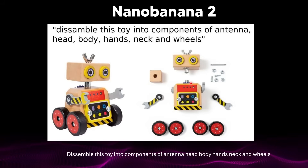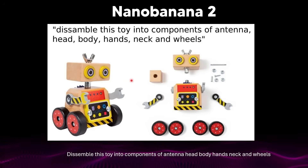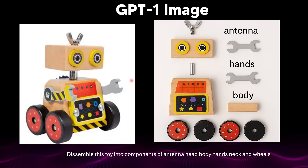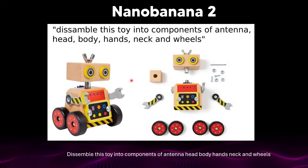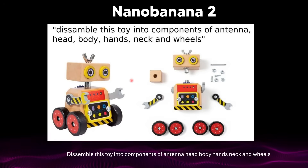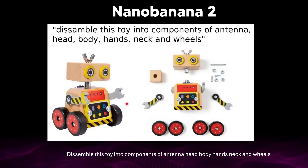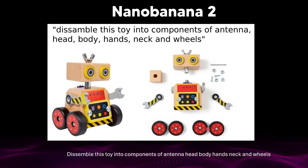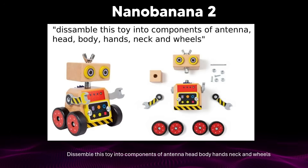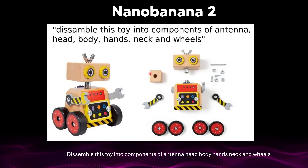This is surprising because people like Gary Marcus would often ask why AI can't reason about spatial intelligence — and they'd cite failures like GPT Image 1 on tasks like this. But Nano Banana 2 is showing true 3D spatial reasoning and physical decomposition. The AI isn't just recognizing what the toy is — it understands how it's built, what parts make it up, and how those parts fit together in real space. It identifies distinct functional parts — antenna, head, neck, body, arms, wheels — demonstrating structural understanding of composite objects, not just visual segmentation.